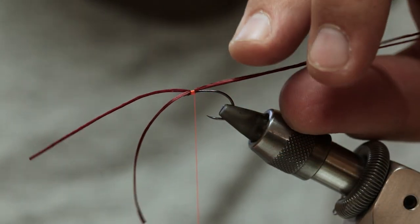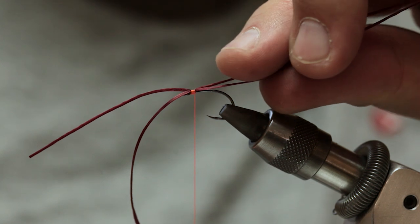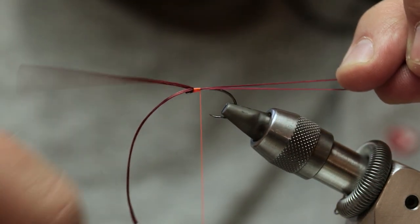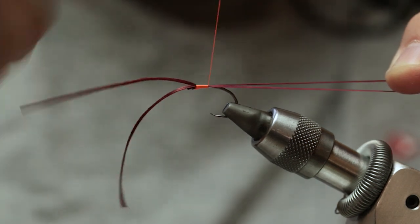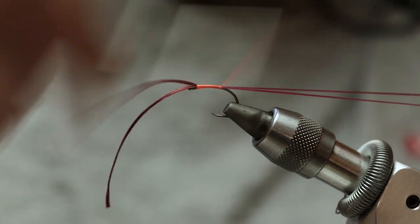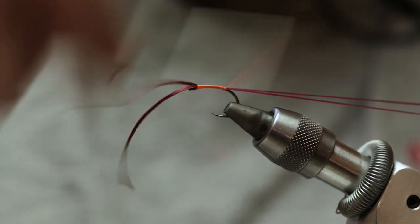So just get it started. And then take your thumb on top of the two strands of flexi. And pull and stretch back as you're tying down. Keep it nice and straight on top of the shank of the hook.